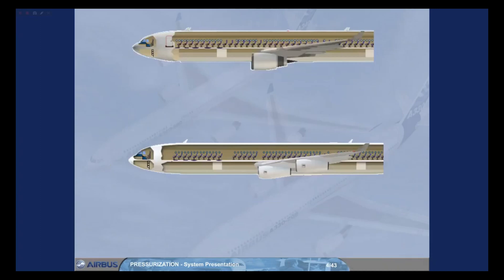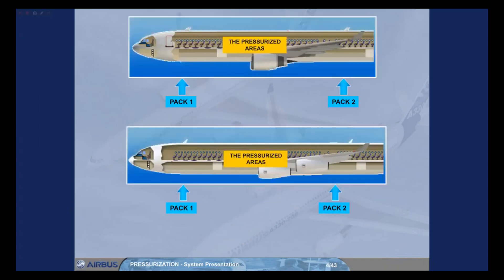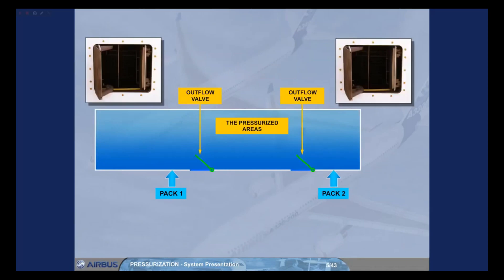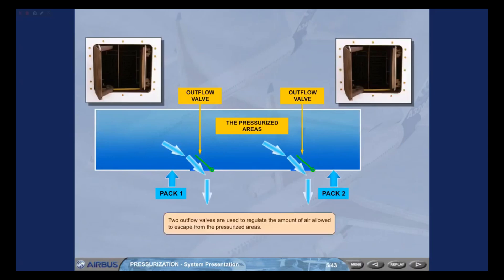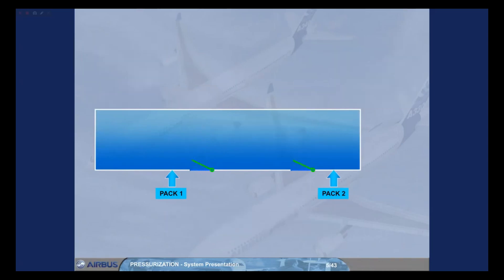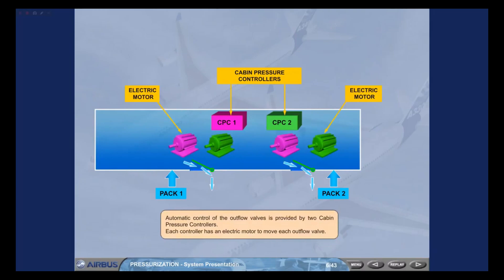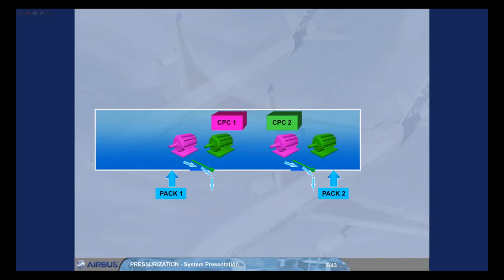The concept of the system is simple. Air is supplied from the air conditioning packs to the pressurized areas. Two outflow valves are used to regulate the amount of air allowed to escape from the pressurized areas. Automatic control of the outflow valves is provided by two cabin pressure controllers. Each controller has an electric motor to move each outflow valve. The combination of a controller and two motors is known as a system. Only one system will operate at any one time, with the other system acting as backup.